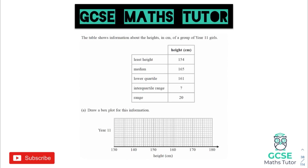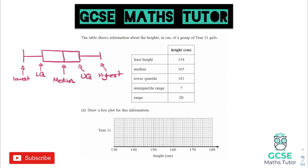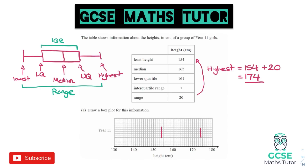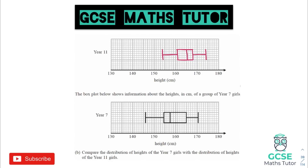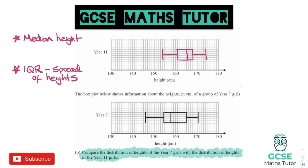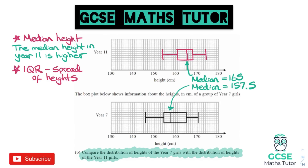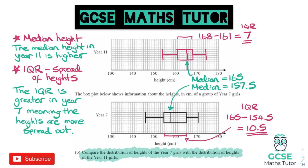If you have to draw a box plot, remember what it looks like and go through any table to find the key values. Here we're given the least value, median, lower quartile, interquartile range, and range — the range helps get from least to highest, and the quartiles allow you to draw the box plot. If you have to compare two box plots, compare the median (which tells you about average) and the interquartile range (which tells you about spread), making sure to mention the context in both comments.